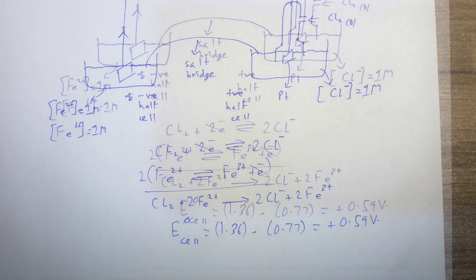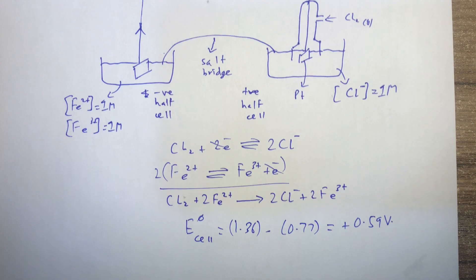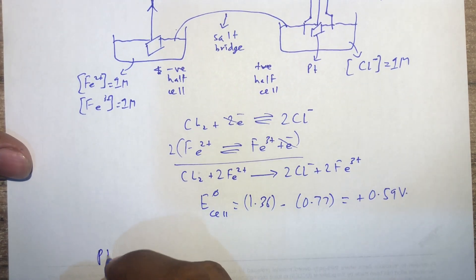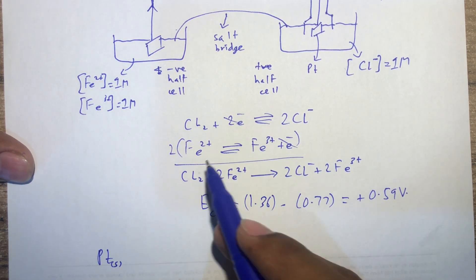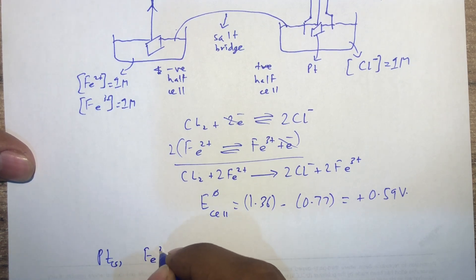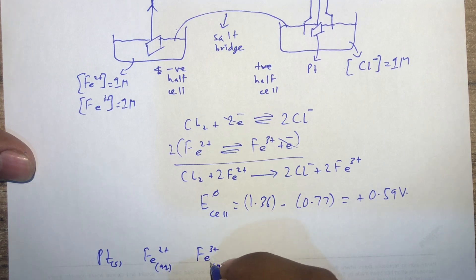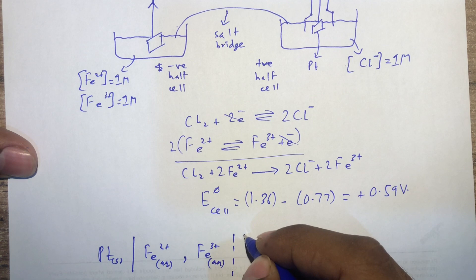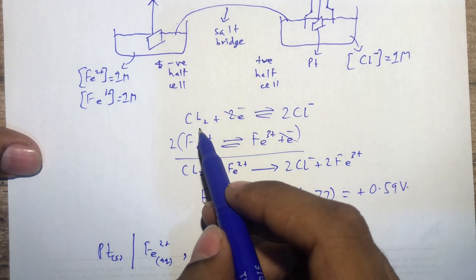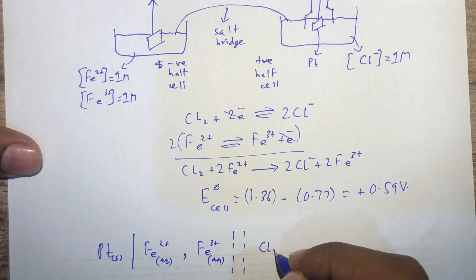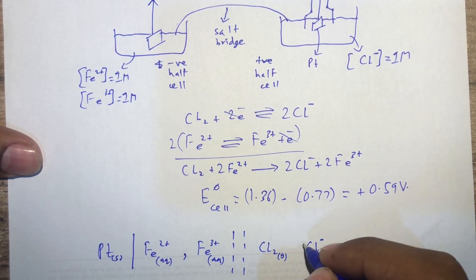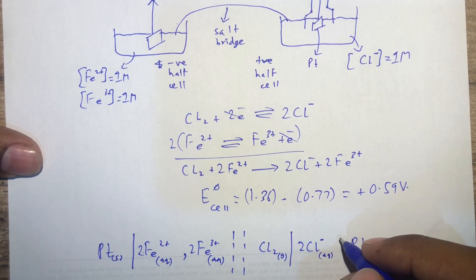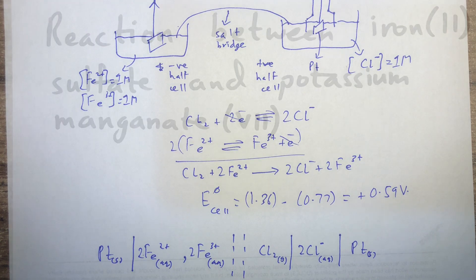For the conventional cell representation: oxidation occurs at the iron electrode, so first write Pt (solid), then electrode interface, then Fe²⁺ (aqueous) comma Fe³⁺ (aqueous) - no state change so a comma is used. Then the salt bridge (double dotted lines). For the reduction side: Cl₂ (gas) then Cl⁻ (aqueous) - state change gives electrode interface - then Pt (solid) with another electrode interface.